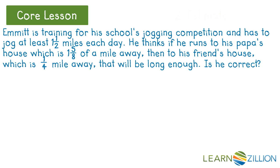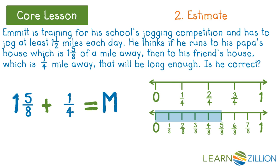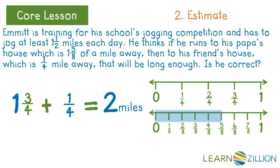Next, let's estimate. We see we are adding eighths and fourths. Since one-fourth is a benchmark number, let's pick the nearest fourth to change five-eighths to. Looking at the number lines, we see two-fourths or three-fourths would work, as five-eighths is in between both. Let's choose three-fourths. Three-fourths plus one-fourth equals one, and then one plus one equals two. We are estimating two miles.